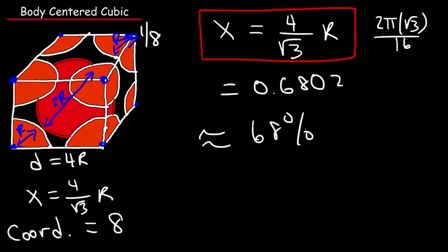So 68% of the volume of the cube is occupied by atoms, and the other 32% is the empty space visible in the structure. That's all you need to know for the body centered cubic structure for now.